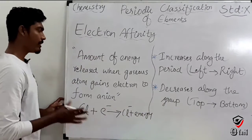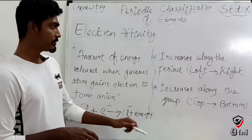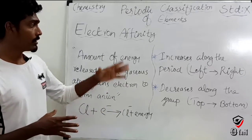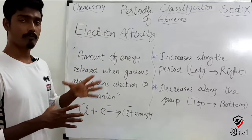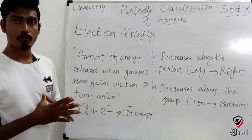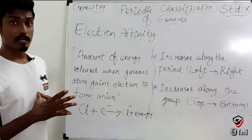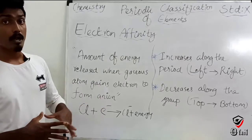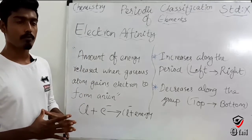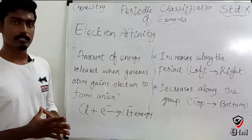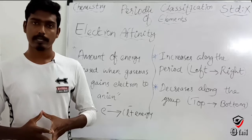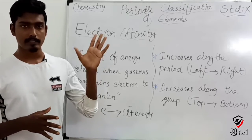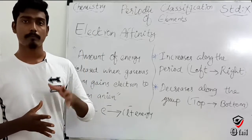Electron affinity has the same periodic trends as ionization energy. Electron affinity increases from left to right across a period. Electron affinity decreases from top to bottom down a group, just like ionization energy.